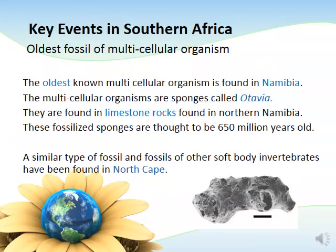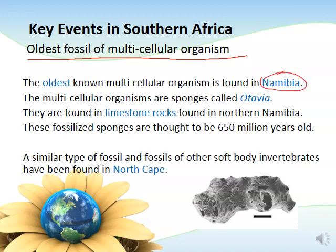We've been talking about the oldest fossil of bacteria, which are unicellular organisms. Now we are looking at the oldest fossil of multicellular organisms. These oldest fossils were found in Namibia and were those of sponges of the phylum Porifera, called Otavia. These sponges were found in limestone rock in northern Namibia and are estimated to be about 650 million years old.